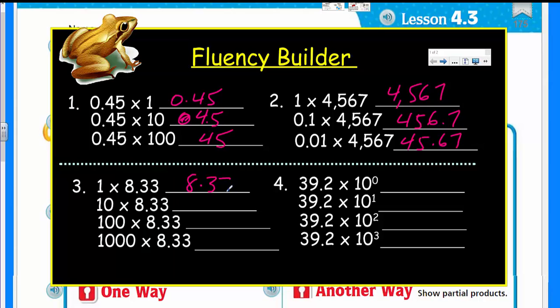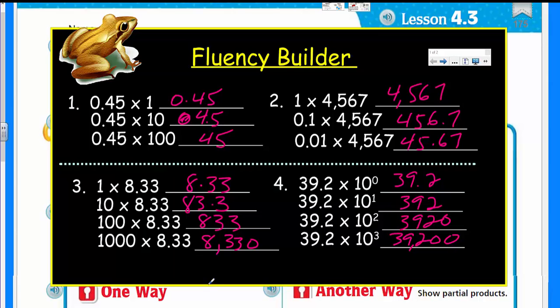Oh, that's 456.7. And then this one's going to be double that. So it's 45.67. Coming over here. That's 8.33. Here we have 83.3. Here we have 833. Here we have 8,330. I believe. One, two, three. I think that's right. Not these. Okay. Zero to raise. That's just one. That's really just saying 39.2, I believe. Raise to the first power times 10. That would be 392. And here we have times two. Is that 3,920? I hope. And here, times 1,000. One, two, three. There are two zeros.